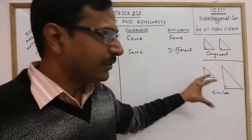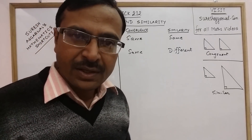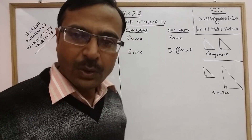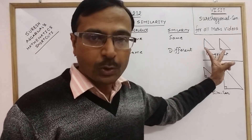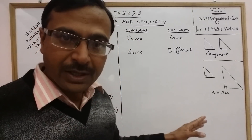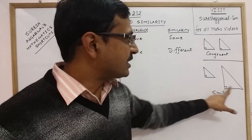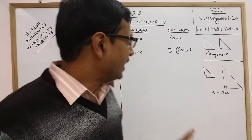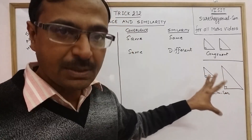You can think of similar figures by visualizing a photostat copy of a document. If you take out the photocopy exactly in the original form, then the two documents will be congruent. But if you reduce or enlarge the photocopy, then the original and the photocopy will differ in size — one will be smaller and one will be larger — but exactly the same shape will be there in both cases. This is the concept of similar figures.